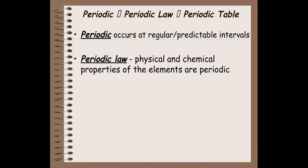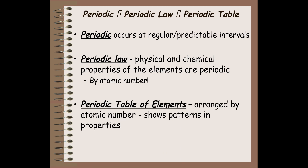When we're talking about periodic law, what we mean is that there are physical and chemical properties of the elements in the periodic table that are periodic — meaning there's a repeating pattern. This repeats by atomic number. The periodic table of elements is arranged by atomic number, and this shows patterns in the properties.